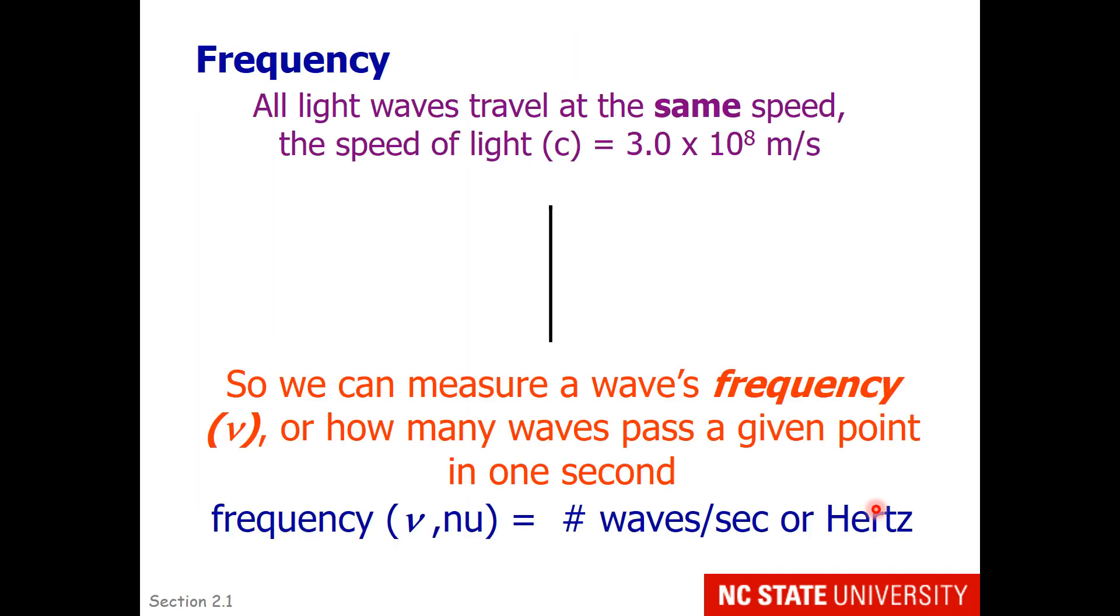Frequency. Frequency is another property of a wave. All light waves travel at the same speed in a vacuum. The speed of light is 3 times 10 to the 8th meters per second. So when we measure a wave's frequency, we measure how many waves pass a given point in one second. Frequency is represented by this term, nu, which looks like a V with a tiny bit of a tail. Frequency has units of waves per second, or cycles per second, or you've maybe heard it called hertz.